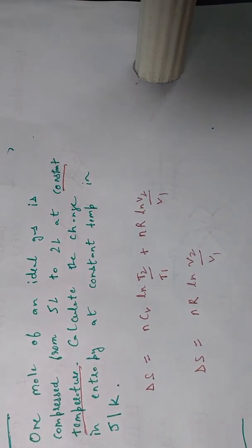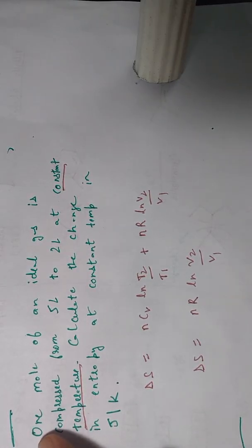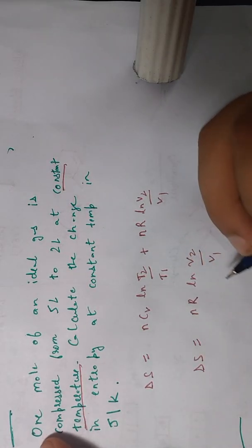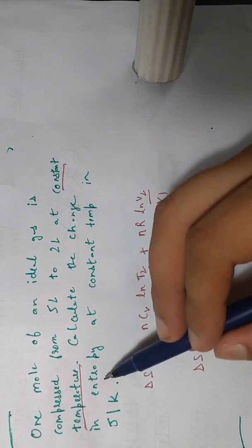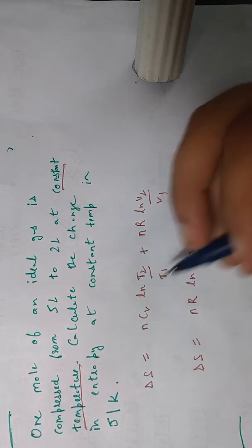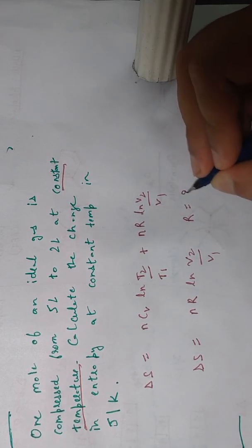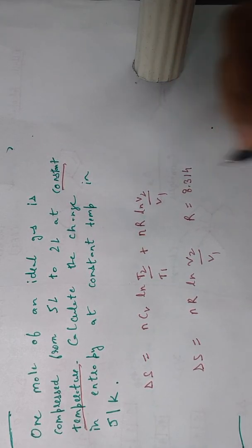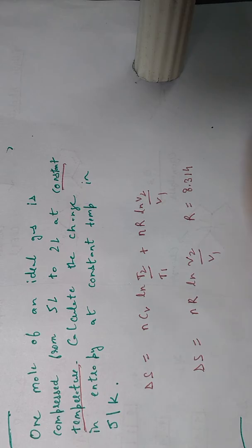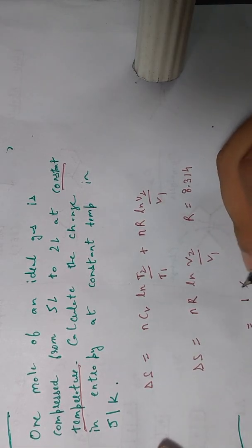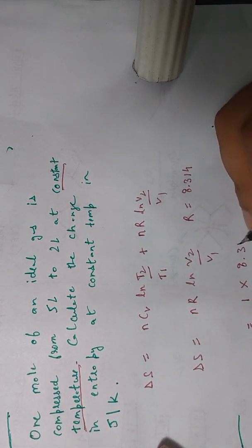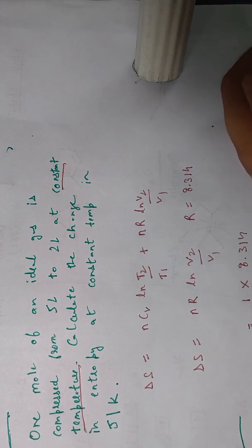It says one mole of an ideal gas, so n equals 1. We need to find the entropy in joule per Kelvin. The value of R in joule per Kelvin is 8.314. So n equals 1, R equals 8.314, and now we need to calculate.